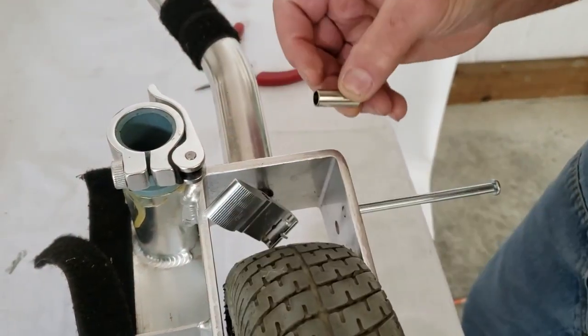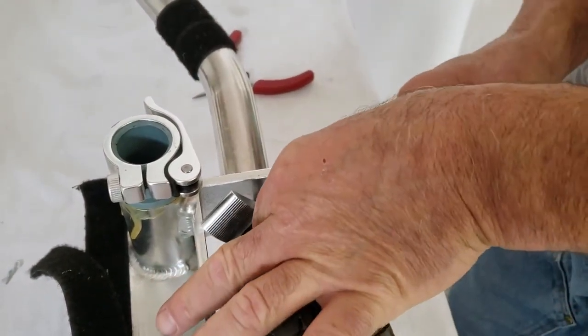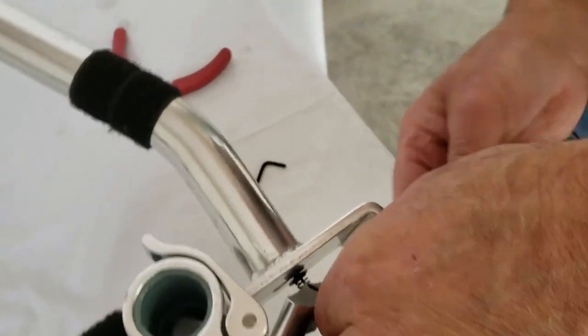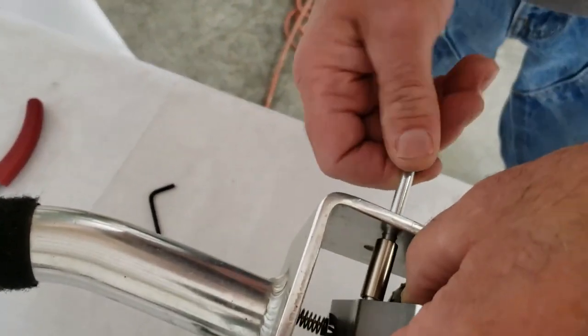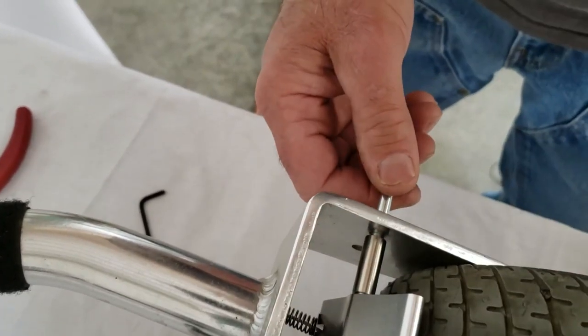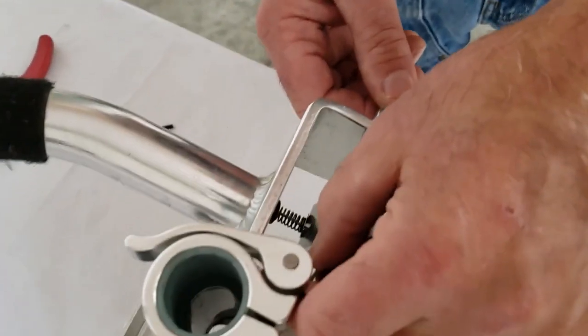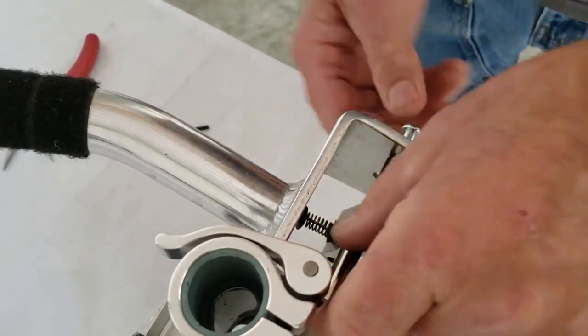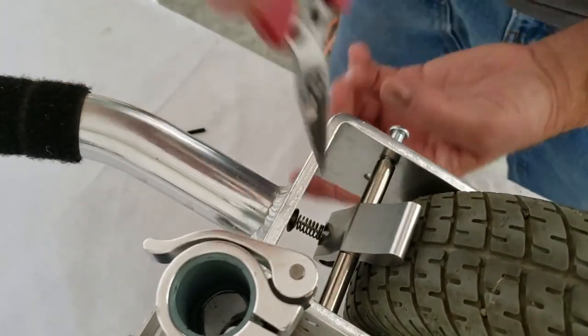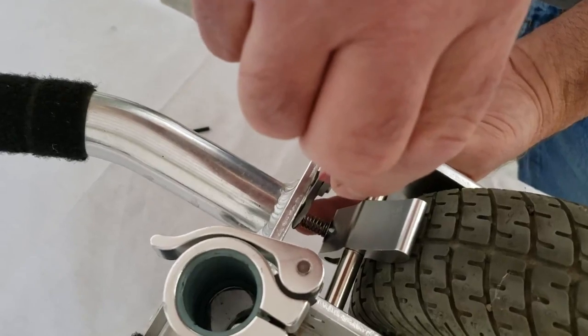You want to have this shorter spacer towards the outside of the fork. Run it through the axle shaft. And this longer spacer goes on the inside.